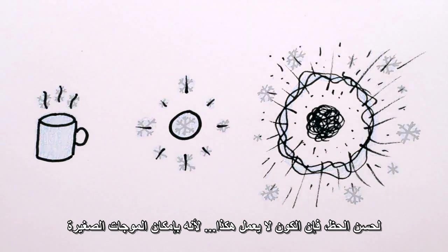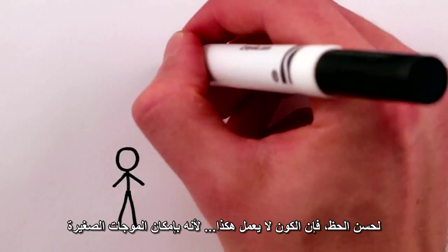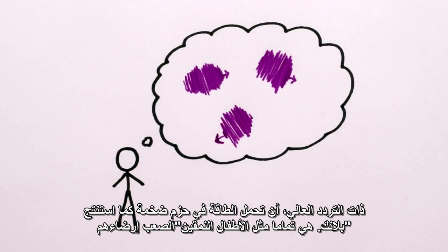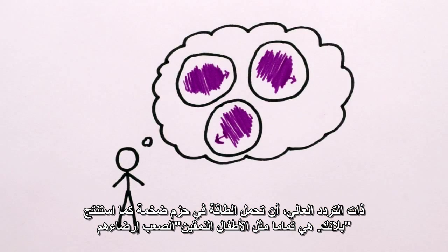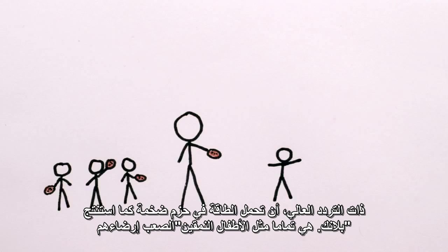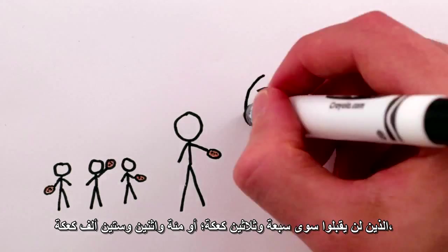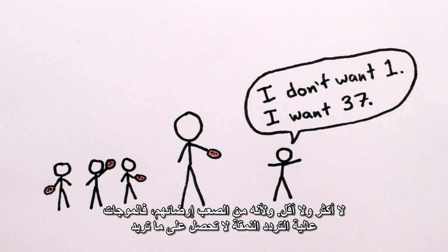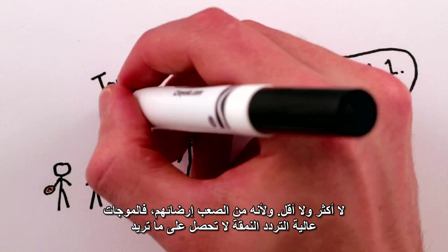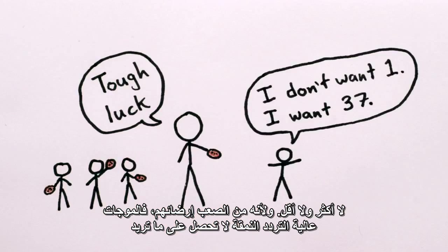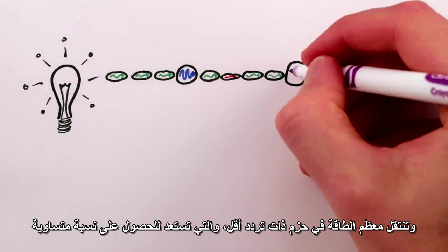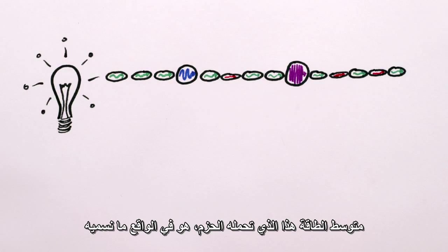Luckily, the universe doesn't work that way, because, as Planck guessed, the tiny high-frequency waves can only carry away energy in huge packets. They're like fussy kids who'll only accept exactly 37 cookies, or 162,000 cookies — no more and no less. Because they're so picky, the high-frequency waves lose out, and most of the energy is carried away in lower-frequency packets that are willing to take an equal share.